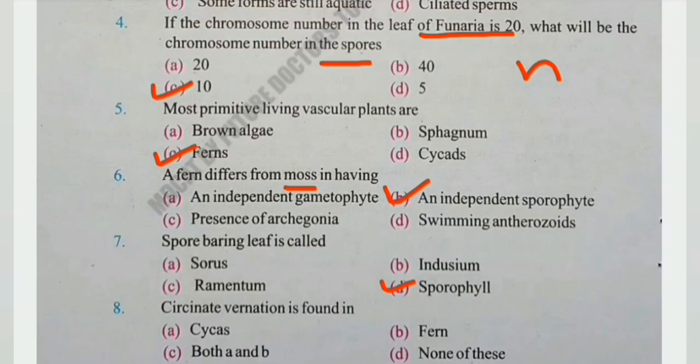Number 8: Circinate vernation is found in — Cycas, ferns, both A and B, or none of these? The right answer is C, both A and B.